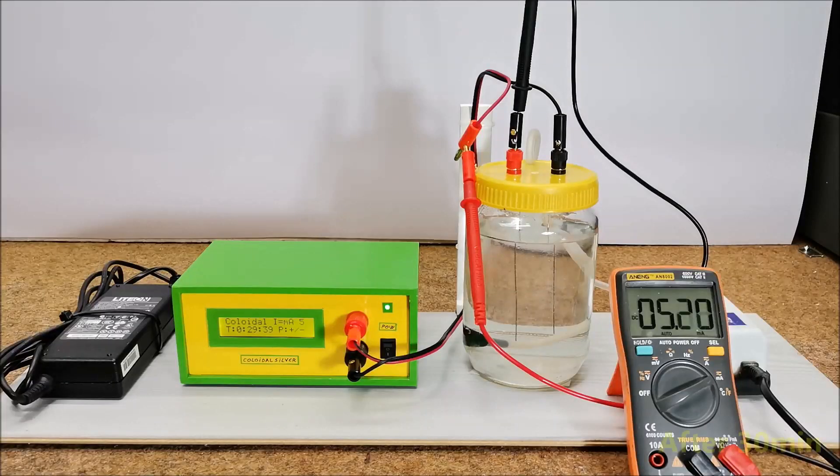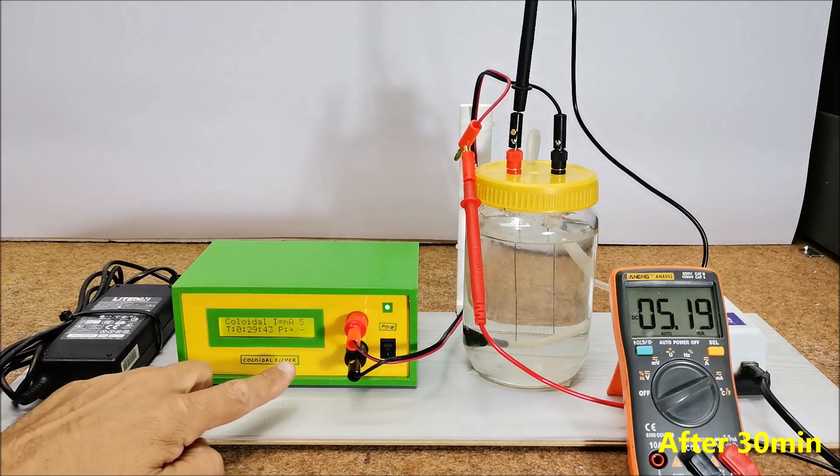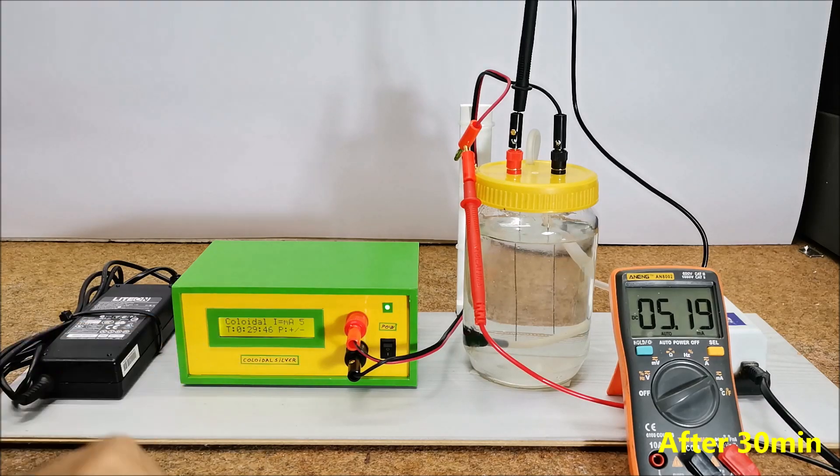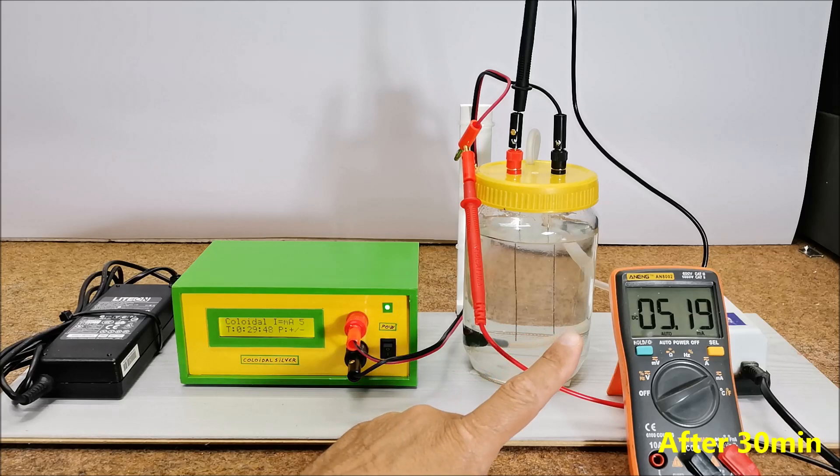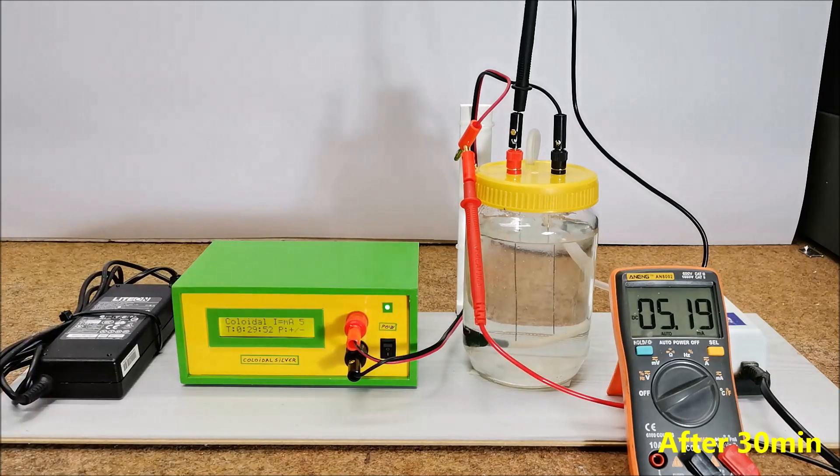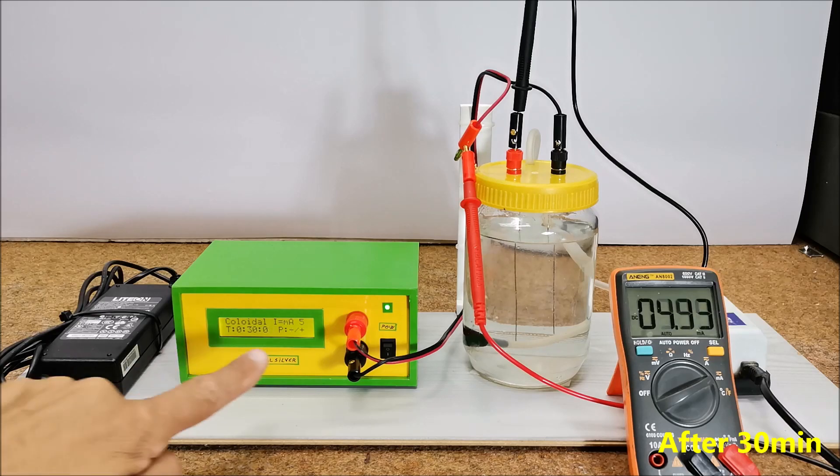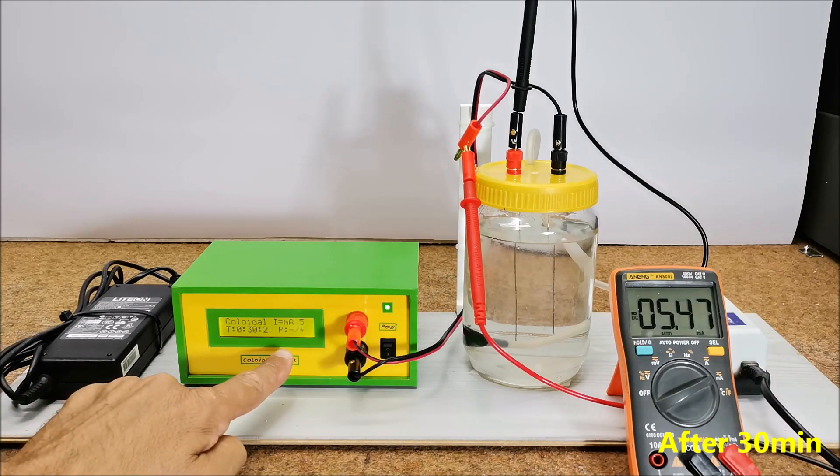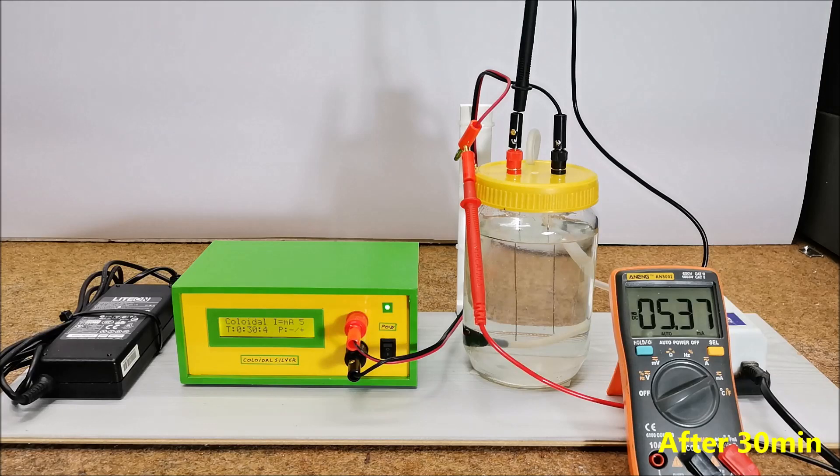As you will be able to see on the screen, after 30 minutes, the polarity of the electrodes will be automatically changed and this can also be seen in the ammeter where the current will have a negative sign. And the current has a negative sign.